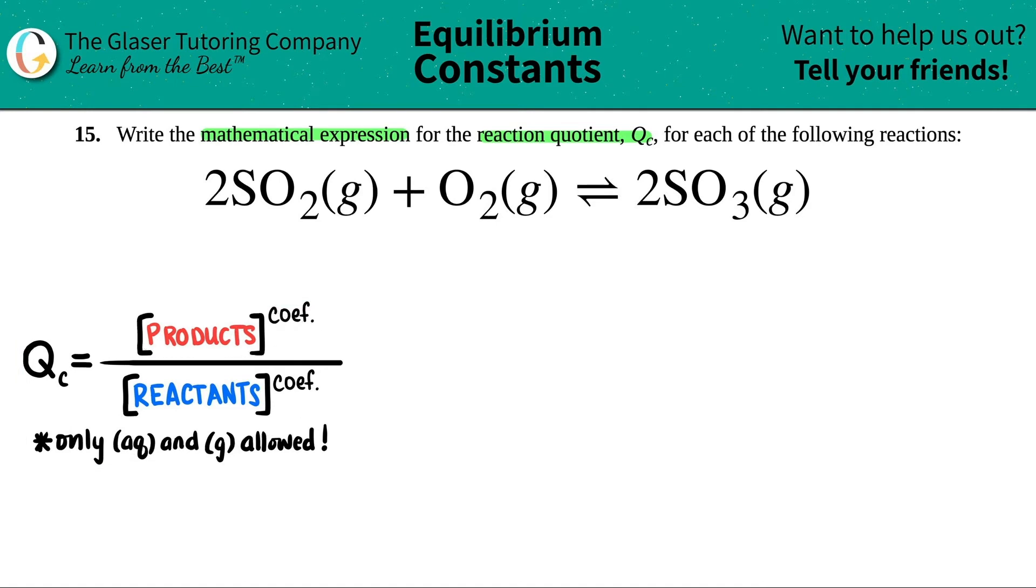It's whatever the products are divided by the reactants, and then just make sure that you raise each product or each reactant to their coefficient, the big number in the front.